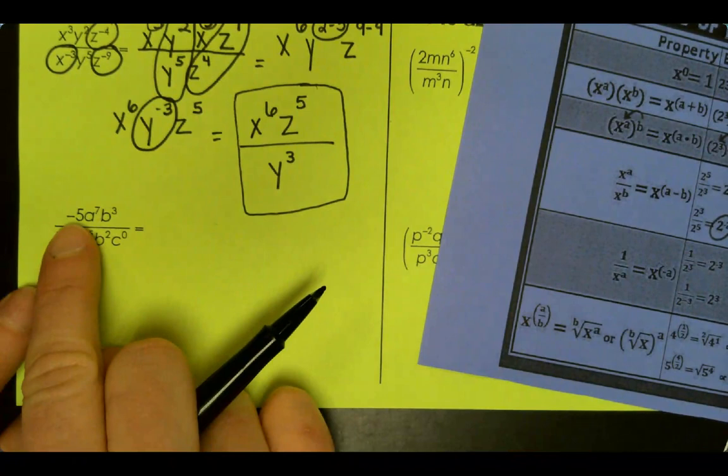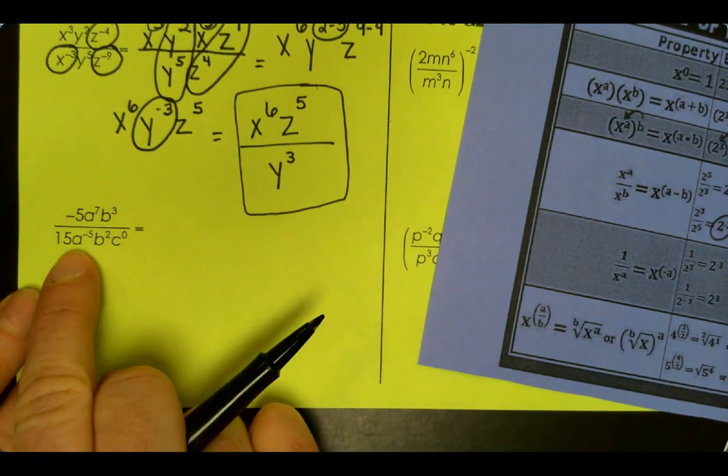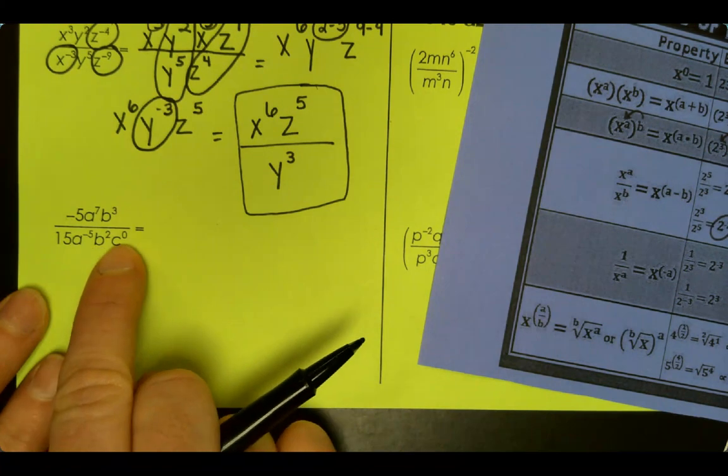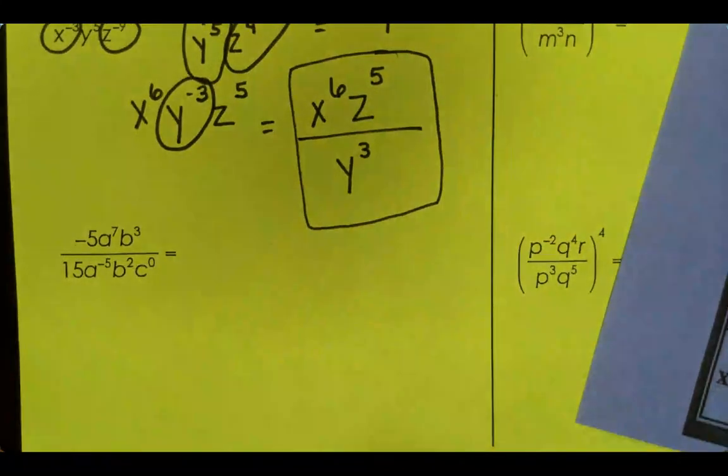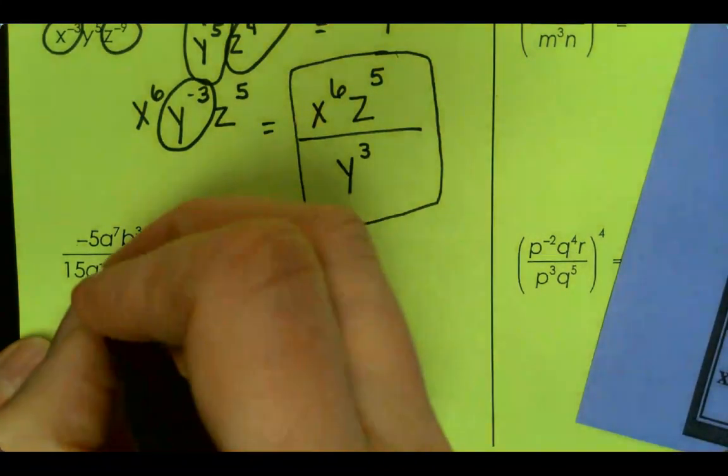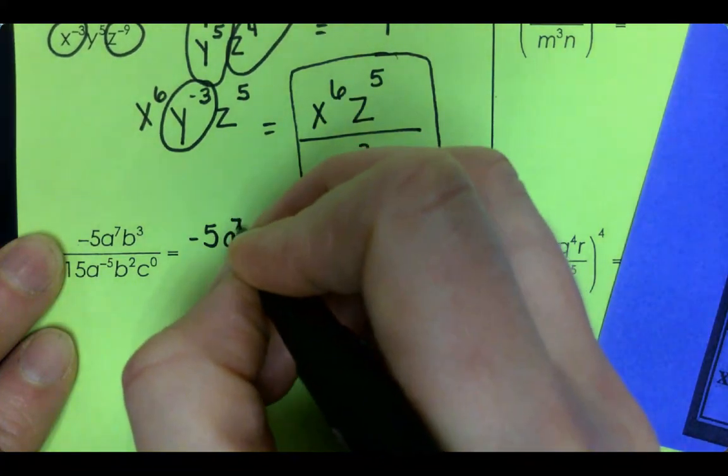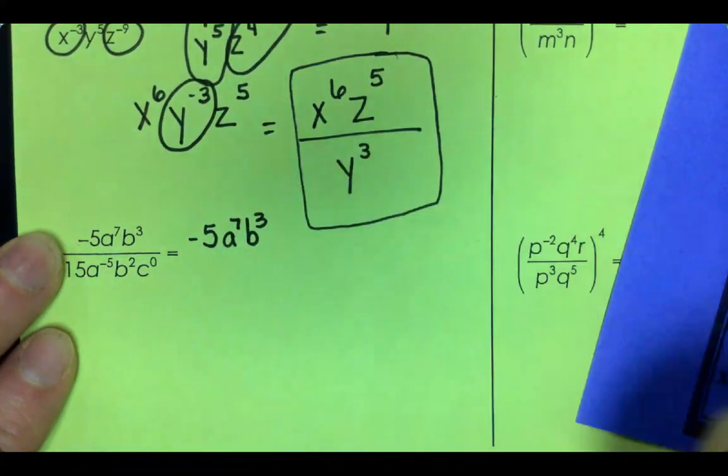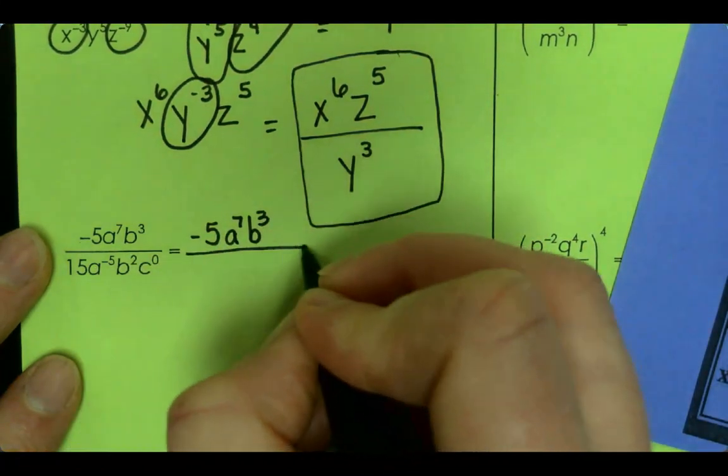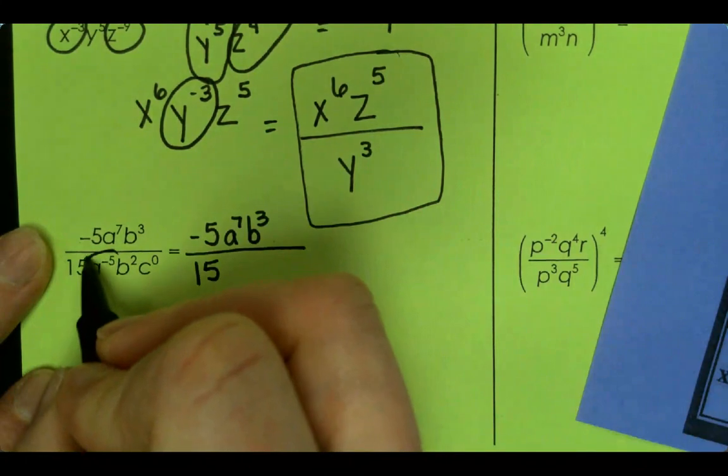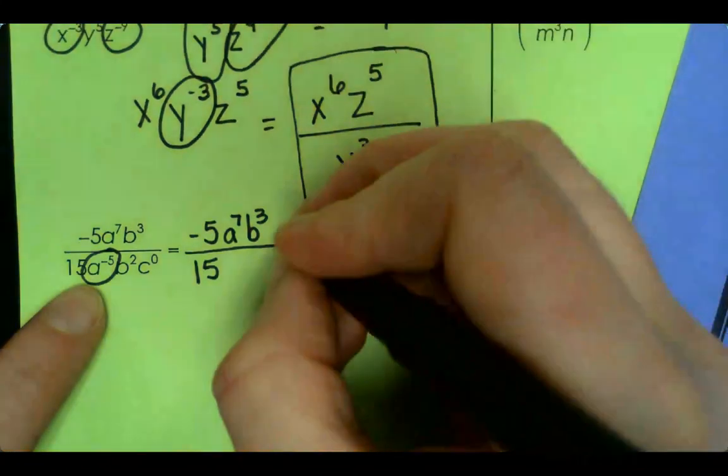Let's go to the next one. Negative 5, A⁷, B³ over 15, A⁻⁵, B², C⁰. So like I did last time, I just rewrote anything that has a negative exponent. So I'm going to rewrite the negative 5, A⁷, B³ over 15. But I have a negative exponent here. I'm going to circle it and move it up top and make it positive.